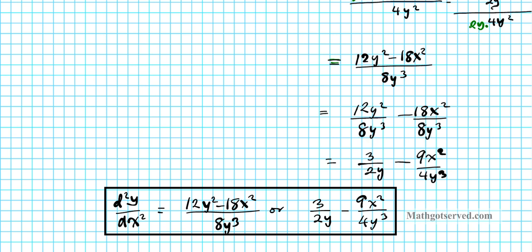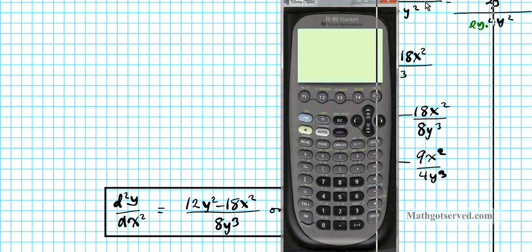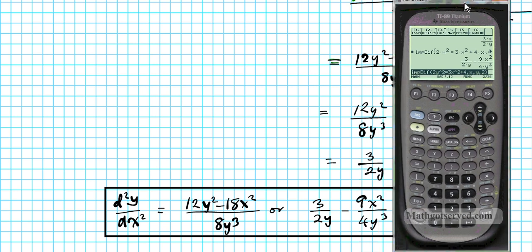Let's verify using the TI-89. Starting from the same impdiff entry for the original equation, the only change is the order — we change the last argument from 1 to 2 for the second derivative. Hitting Enter gives 3/(2y) minus 9x²/(4y³), confirming our answer is correct.